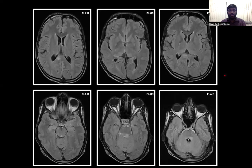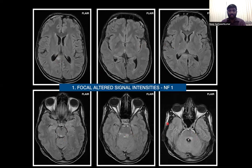Moving on to the first case, we see multiple areas of FLAIR hyperintense signal involving the splenium of corpus callosum on the right side, bilateral gangliocapsular regions, midbrain on the right side, and periventricular area of pons. This is a case of focal altered signal intensity in neurofibromatosis 1.